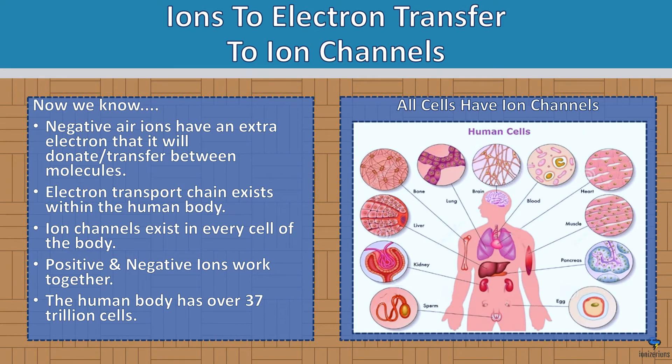From ions to electron transfer to ion channels: negative air ions have an extra electron that they will donate and transfer between molecules. The electron transport chain exists within the human body. Ion channels exist in every single cell of the body. Positive and negative ions work together — and the human body has over 37 trillion cells, each one with ion channels.